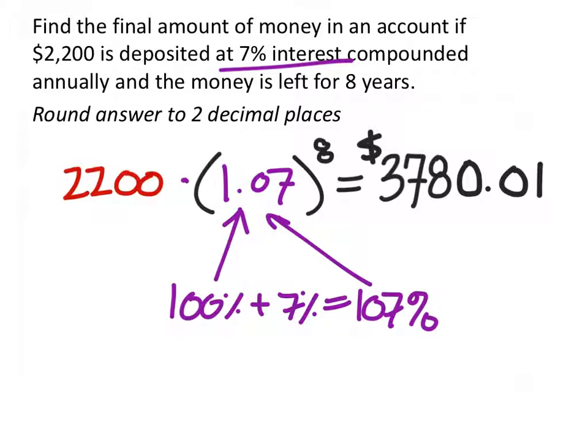And hopefully you guys can see how that works. It's 107% for eight years. And we just multiply that by the principal amount, which was $2,200.